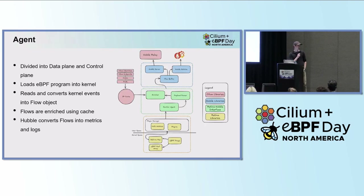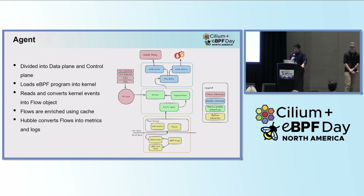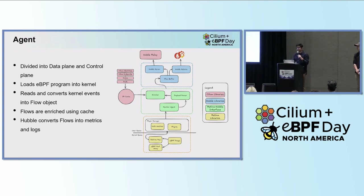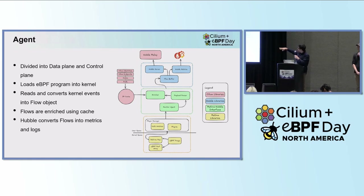Anubob is going to talk about the architecture. Let's look at how all of this works. We're looking at a cross-section of one of the more important components in Retina, which is called the Retina agent. The agent is in charge of collecting data from the Linux kernel, as well as running the Hubble server to publish metrics and traces. It's a three-layered cake.